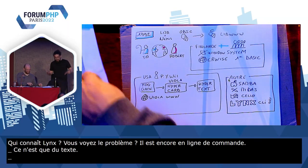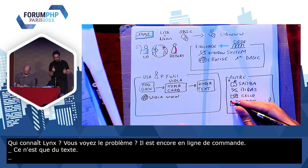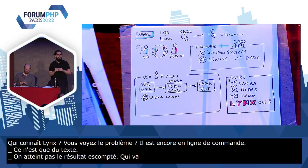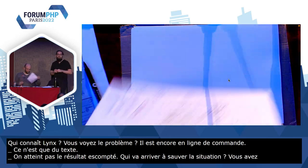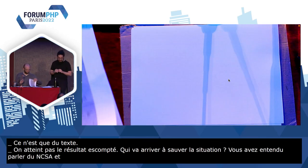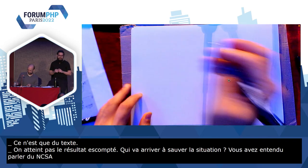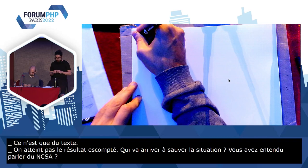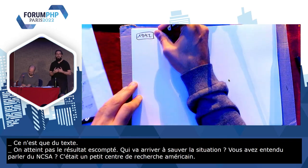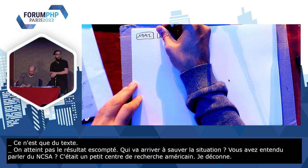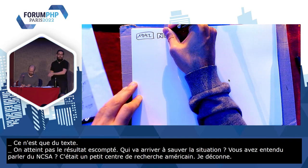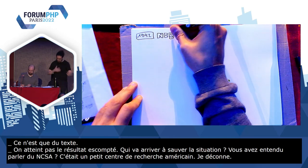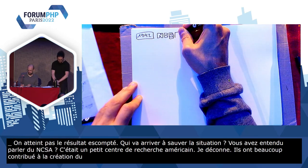Et donc, on n'atteint pas le résultat escompté. Qui c'est qui va arriver pour sauver la situation ? Vous avez entendu parler du NCSA ? C'était un petit centre de recherche américain qui a eu une influence de ouf. Typiquement, ils ont énormément contribué à l'adoption du TCP/IP et du Telnet face au DECnet, parce qu'ils étaient très portés standards ouverts, interopérabilité, etc.